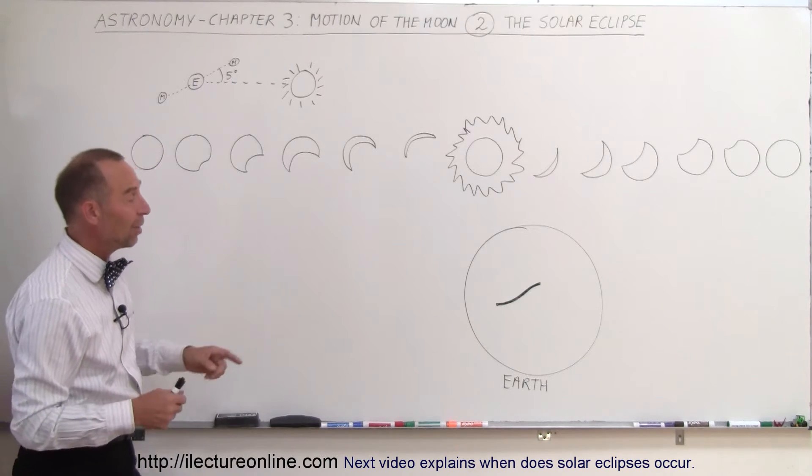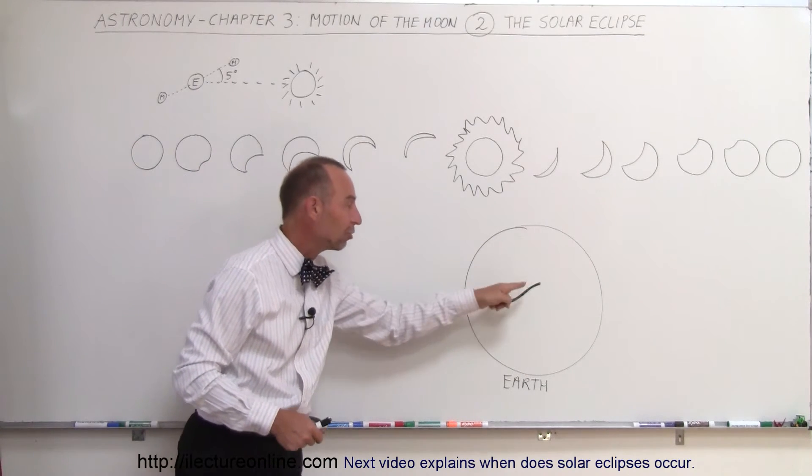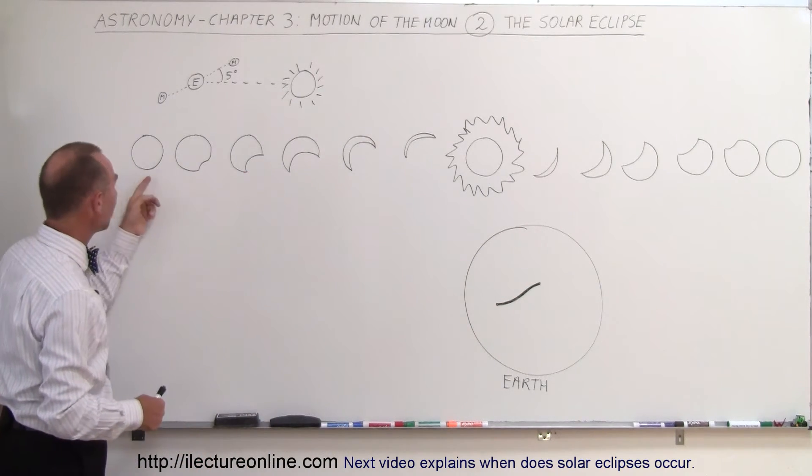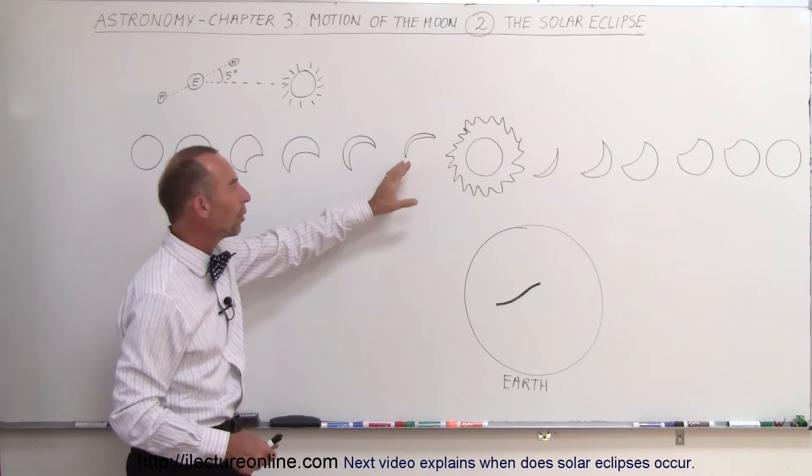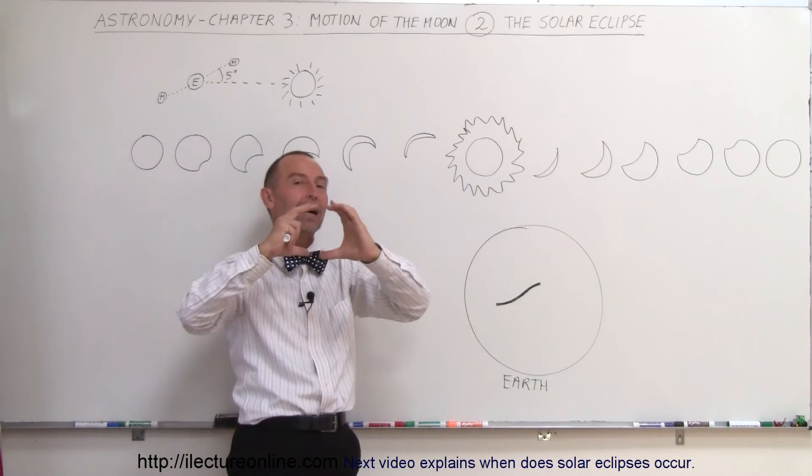What do people get to see when you happen to be right somewhere in that strip? You'll slowly begin to see the disk of the Sun disappearing. Notice it gets smaller and smaller. At some point, the entire disk is covered by the Moon.